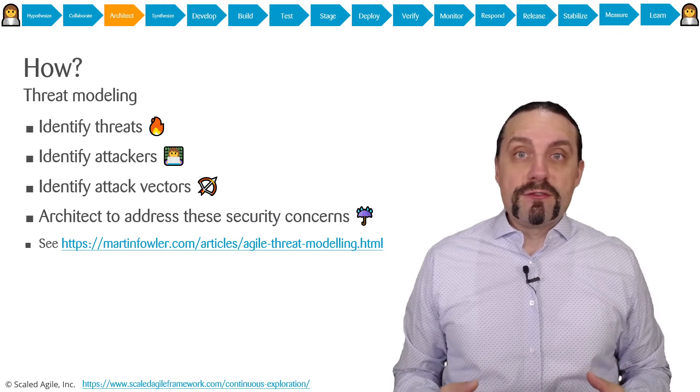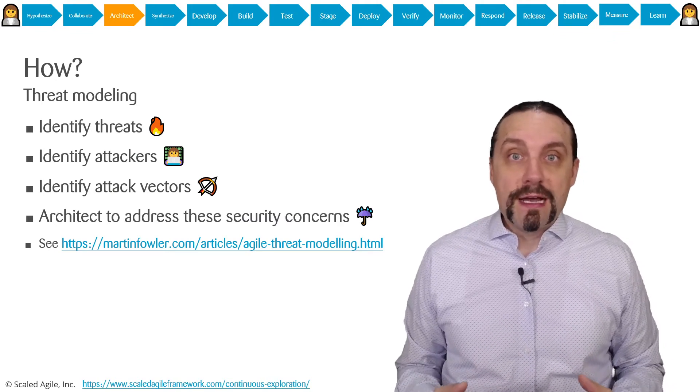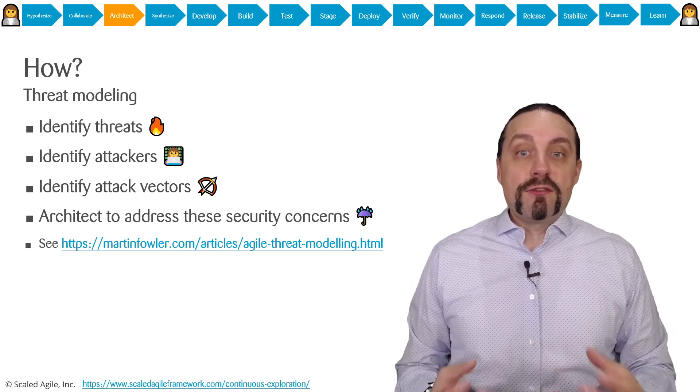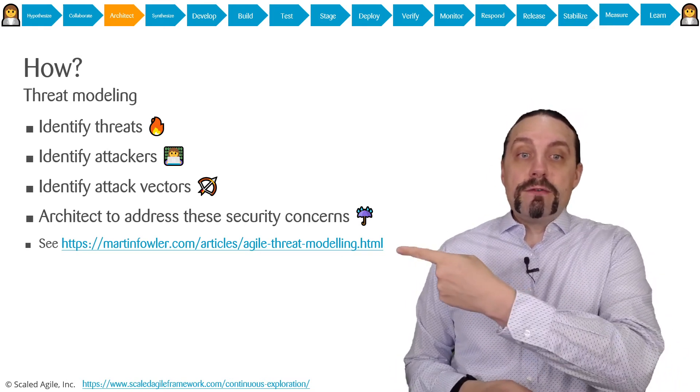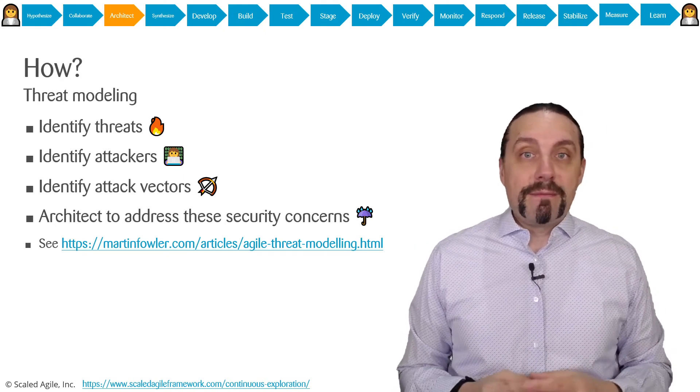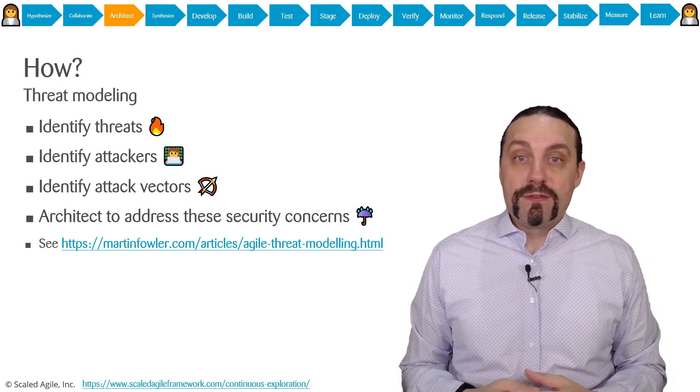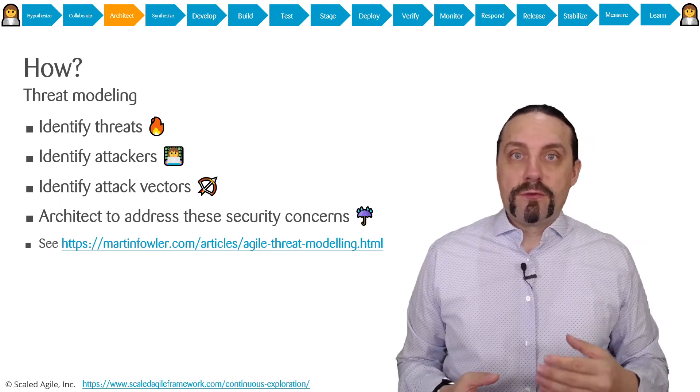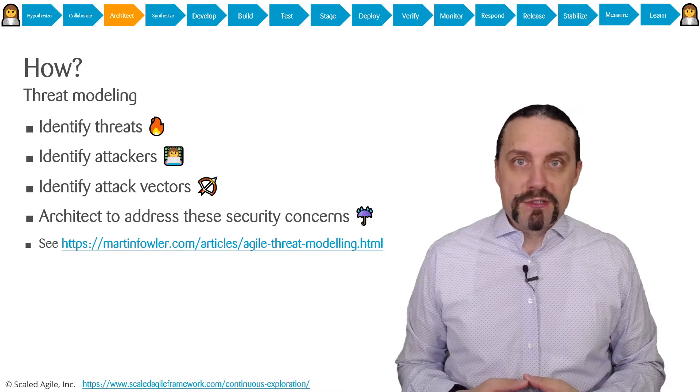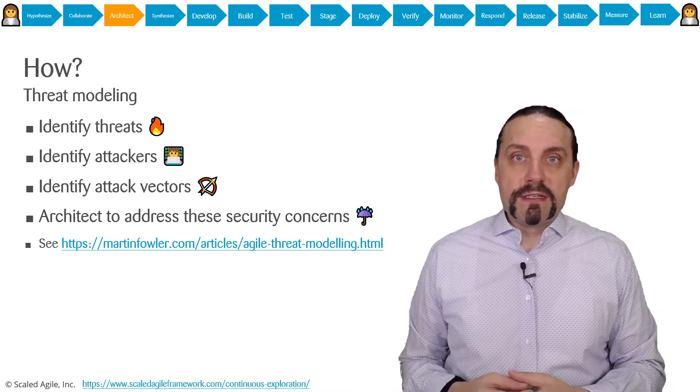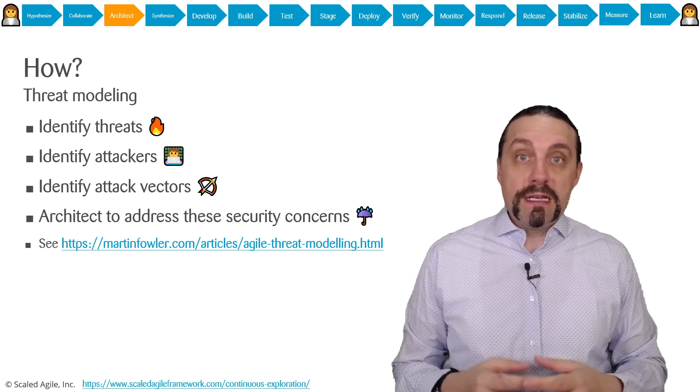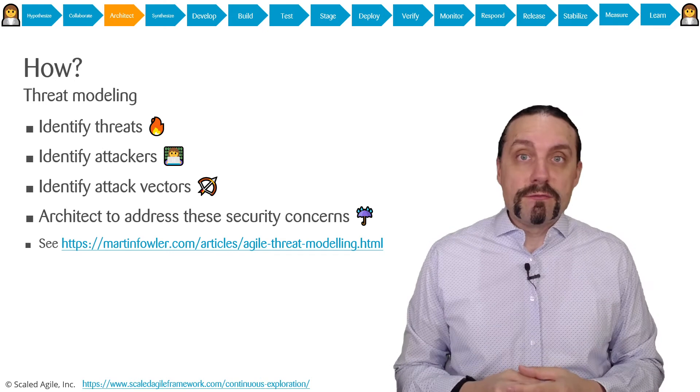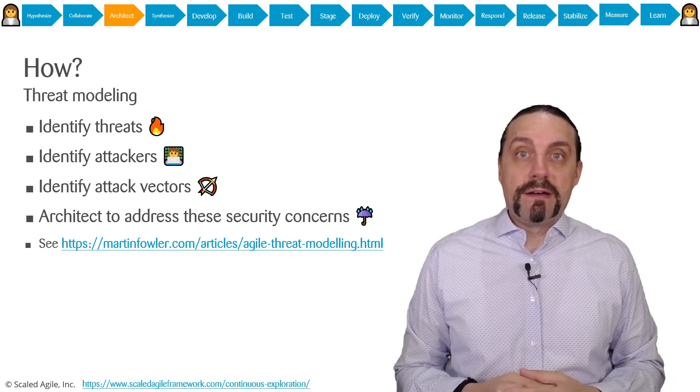Of course we also need to take security into account when architecting, and we do that by using threat modeling. There's a very good article by Martin Fowler about how to do threat modeling. You need to do threat modeling for internet-facing applications, but also for internal applications. There you also have some threats.